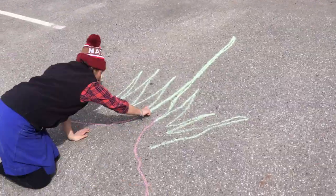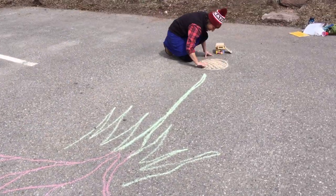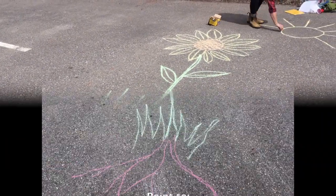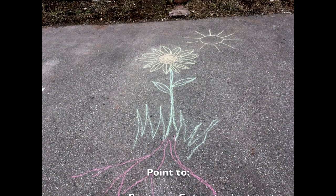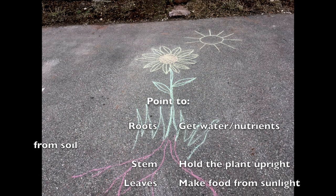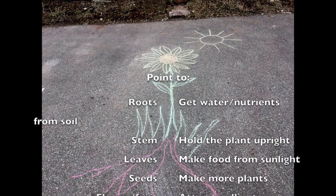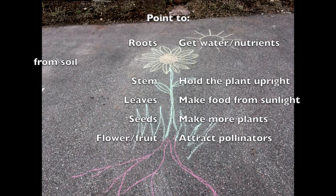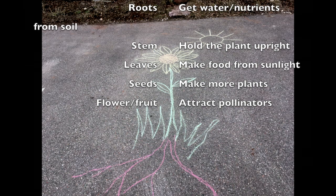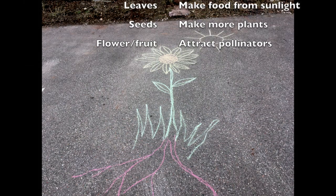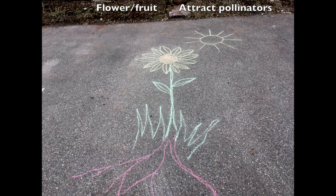Let's review what makes a plant a plant. There are a few things that make plants unique from other living things. They have roots — to get water and nutrients from the soil. A stem — to hold them upright. Leaves — to make food from sunlight. Seeds — to make more plants. And flowers or fruits — to attract pollinators like birds and bees. Try pointing to all these parts on the picture on the screen.